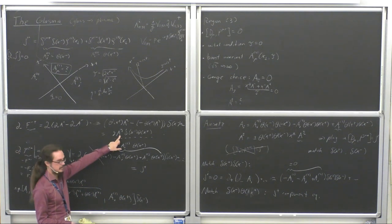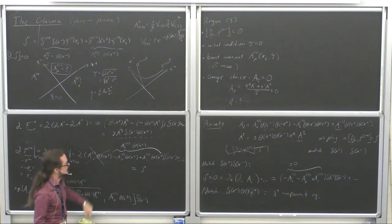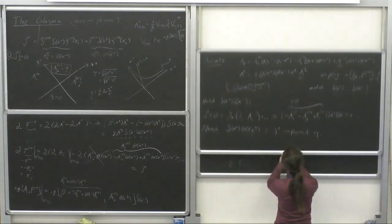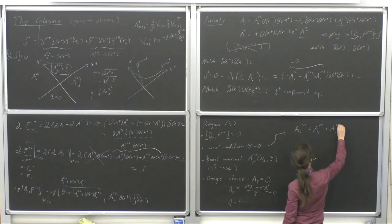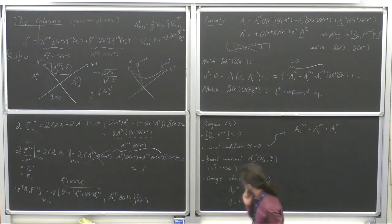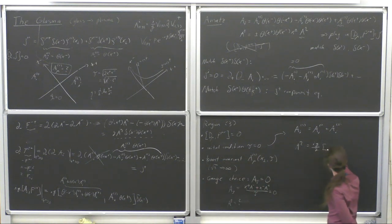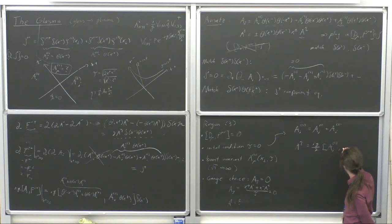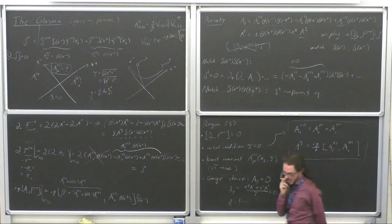If I clean up the mess and take into account the factor of two, I can write down the initial conditions at tau equal zero: the transverse component A^i is just the sum of the transverse fields of the individual nuclei, A^i_1 + A^i_2. Then the eta component with eta upstairs is (ig/2) times the commutator [A^i_1, A^i_2]. These are the initial conditions of the glasma fields. I think this is a good place to take a break.